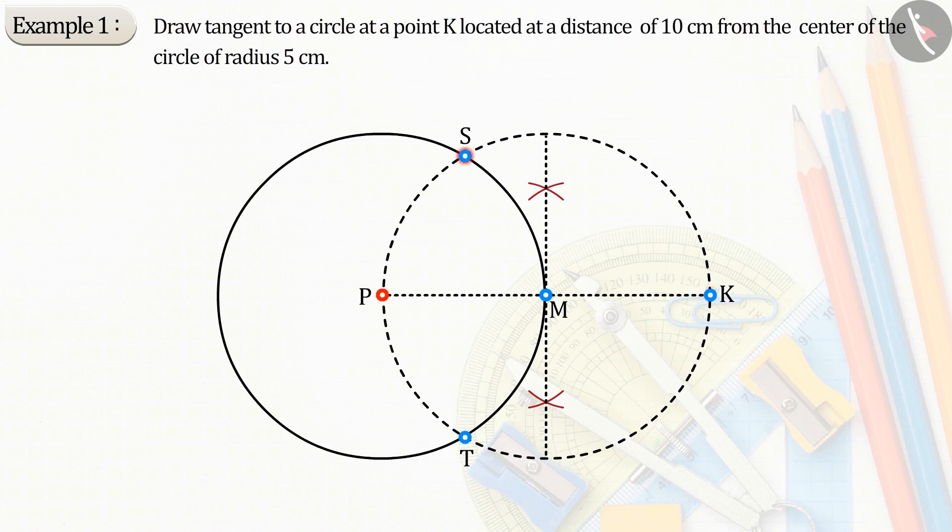Which intersects the first circle at point S and T. From point K, draw lines through point S and T. The tangents are KS and KT. The KS and KT are two tangents that we had to create.